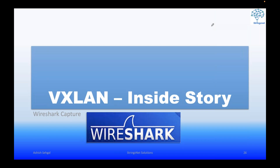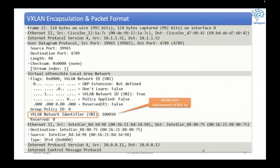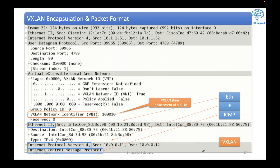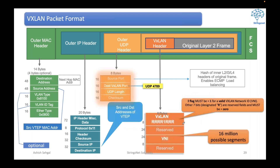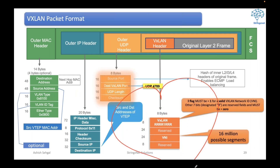To understand VXLAN, we will go into the inside story using our tool called Wireshark. We will capture a Wireshark output and decipher each and every component — see where exactly VXLAN is and why, because we need to understand the contents and various fields involved in VXLAN. Wireshark will force us to go into the VXLAN frame format and understand the role of each field, including which specific bit in the VXLAN header tells us we have a valid VXLAN ID.